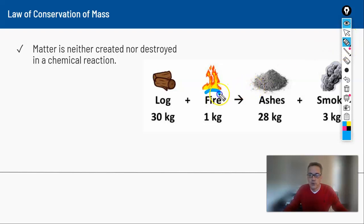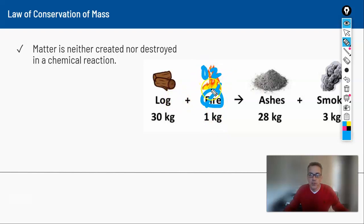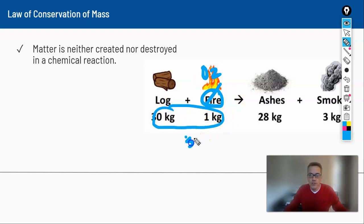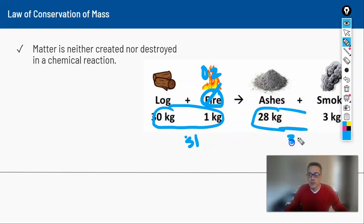For a log to burn, it needs to combine with oxygen. The important part is that the numbers on the left-hand side add up to 31, and the numbers on the right-hand side also add up to 31.